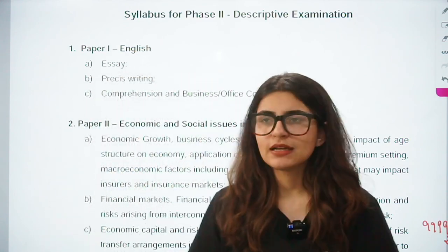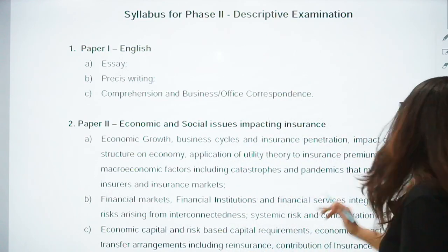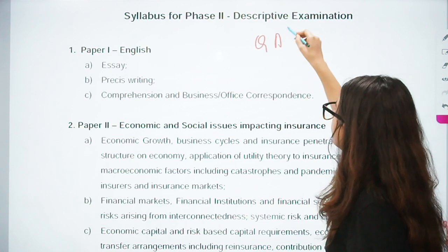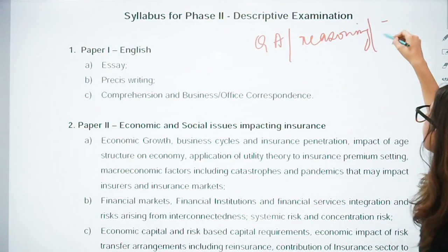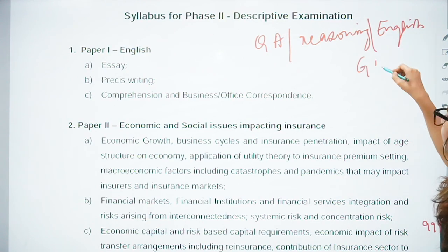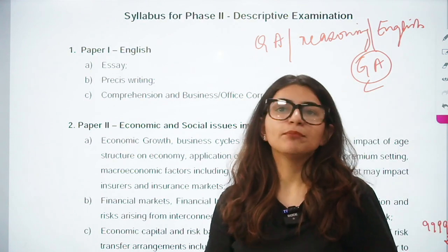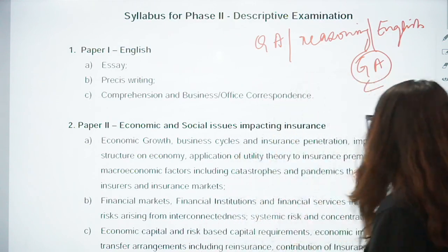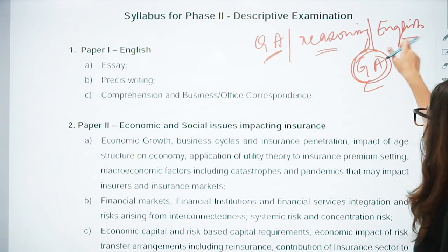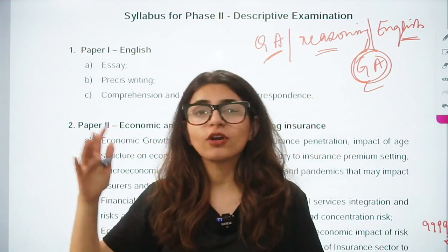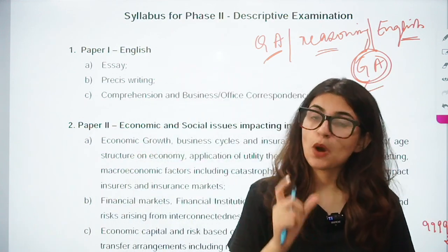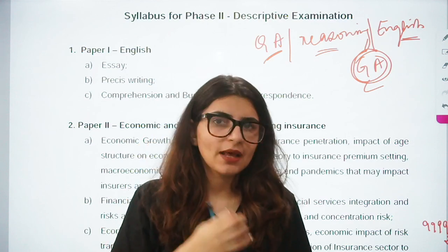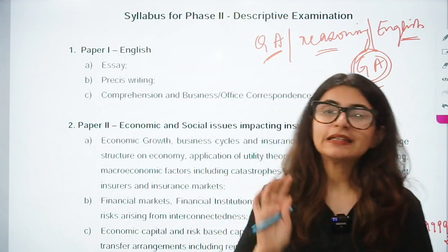Apart from the insurance section, Phase 1 syllabus covers quantitative aptitude, reasoning, English, and general awareness — the same as RBI Grade B. In GMA we study various schemes, general awareness, current affairs, union budget, and economic survey. Since we already prepare all of this for RBI Grade B, Phase 1 will not be very difficult for those already preparing for RBI, NABARD, or SEBI exams.